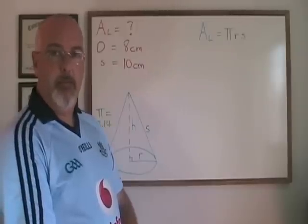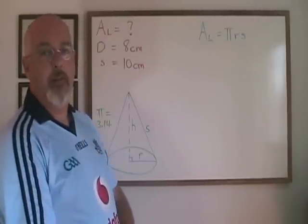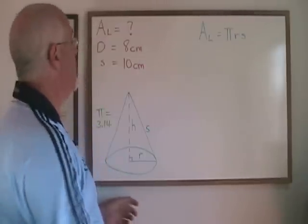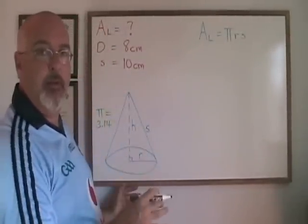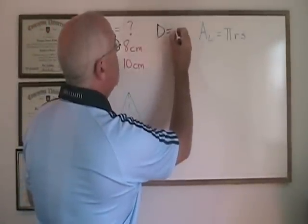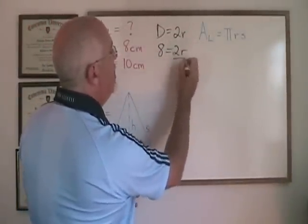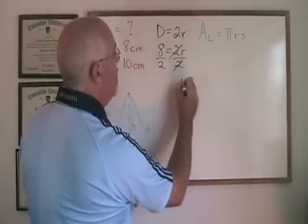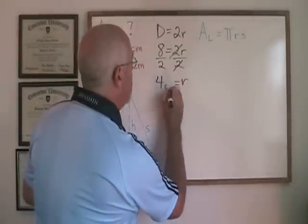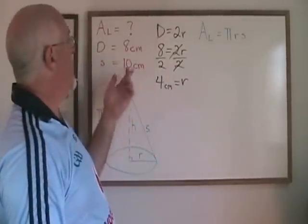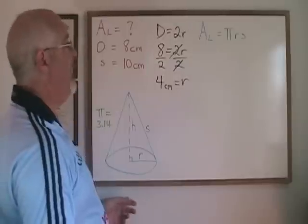In this example, there's an extra step. We are asked for the lateral area of the cone. We are given the slant height, but we are not given the radius — we are given the diameter. 8 centimeters is the diameter. Since we need the radius for this formula, we use the formula diameter equals 2 times radius. If diameter is 8, then 8 equals 2r. Divide both sides by 2, r is isolated, and the radius equals 4 centimeters. Now we can plug the radius, slant height, and pi into the lateral area formula and simplify.